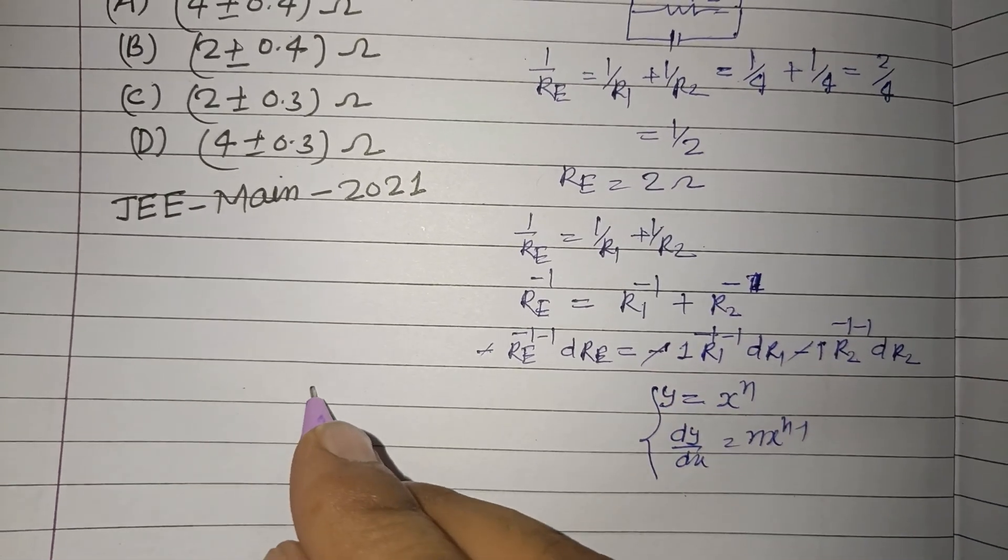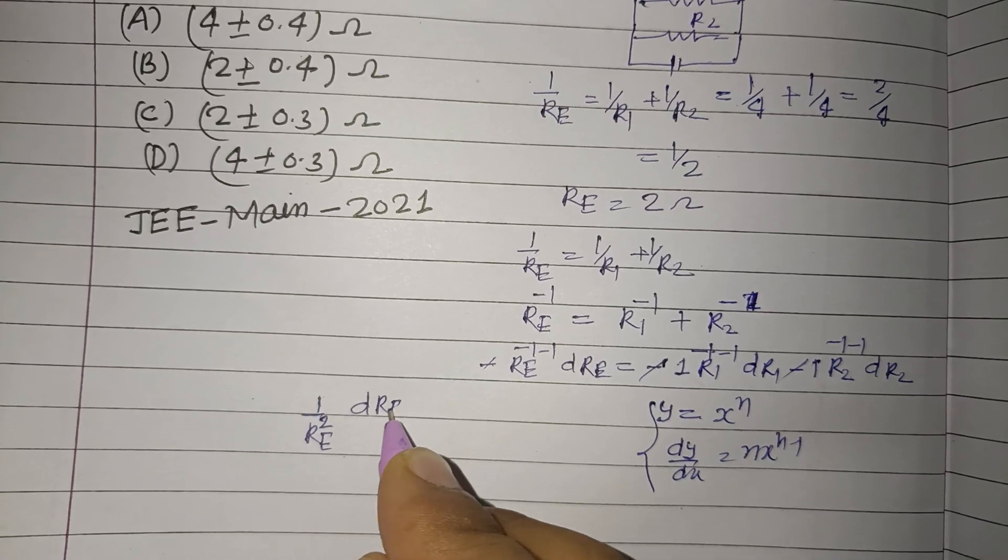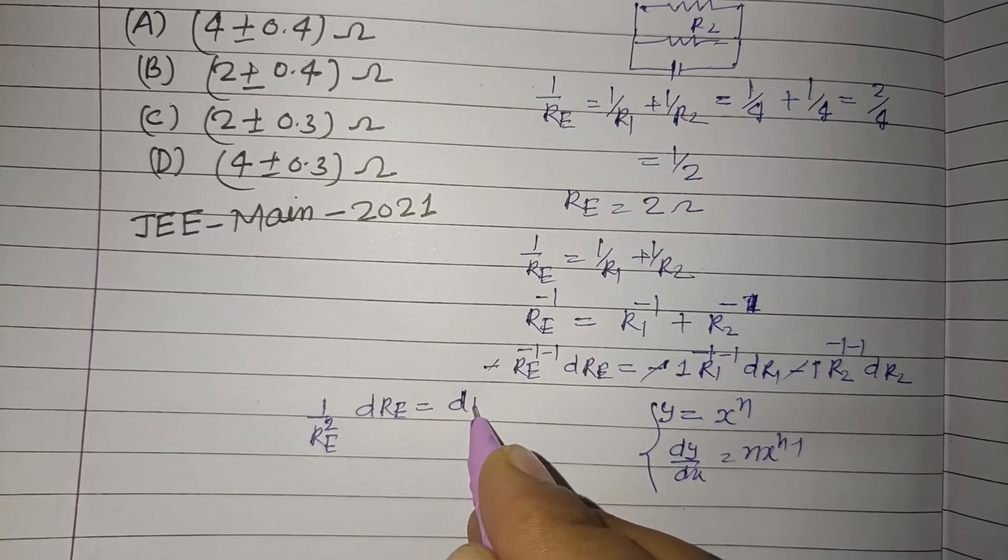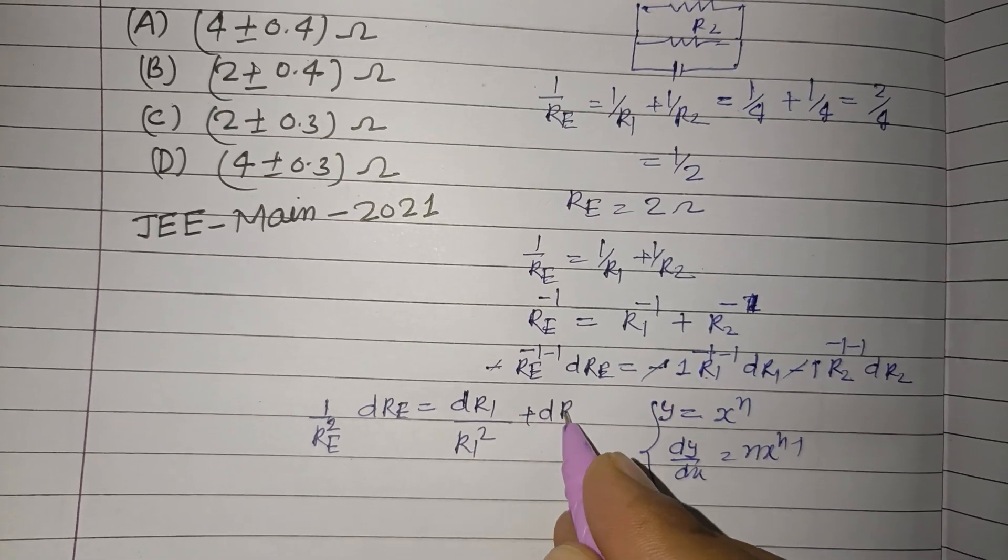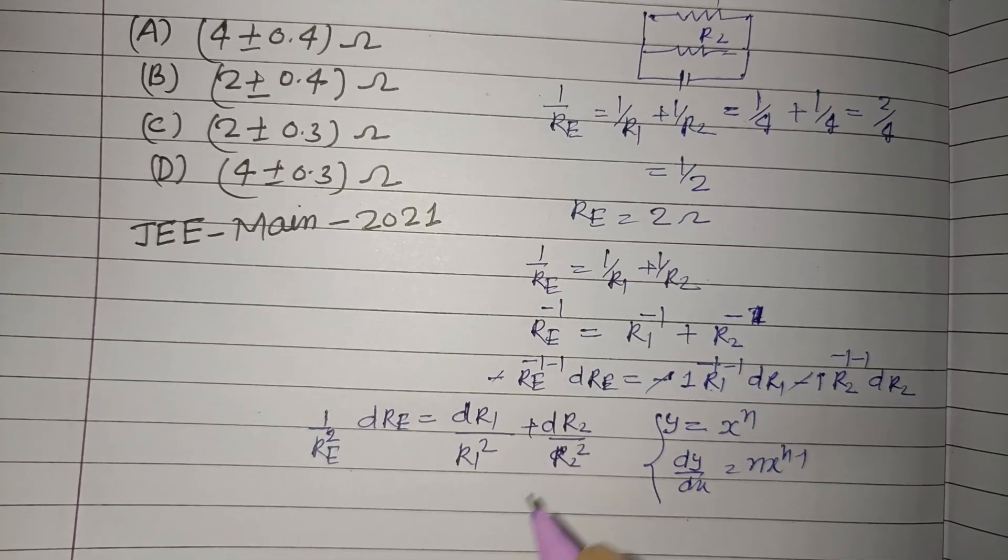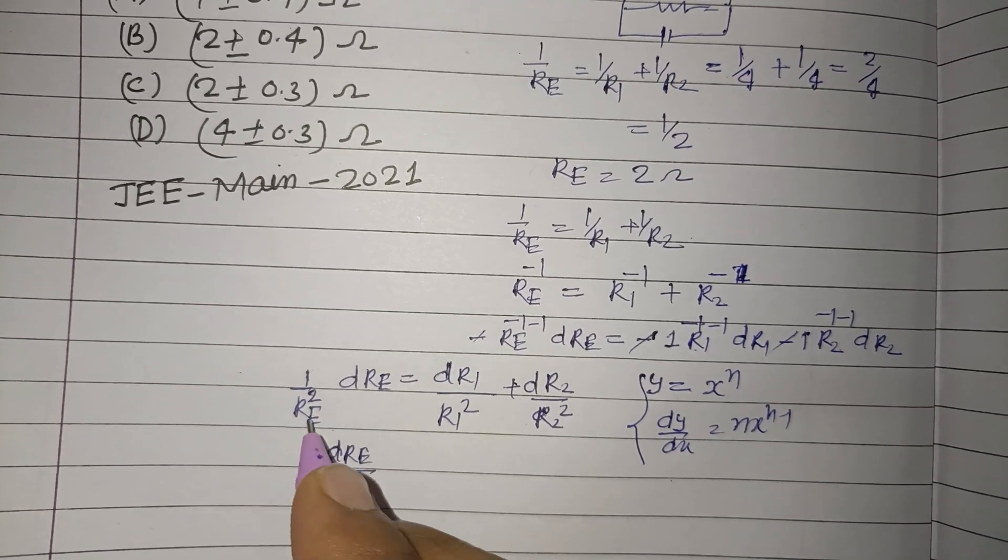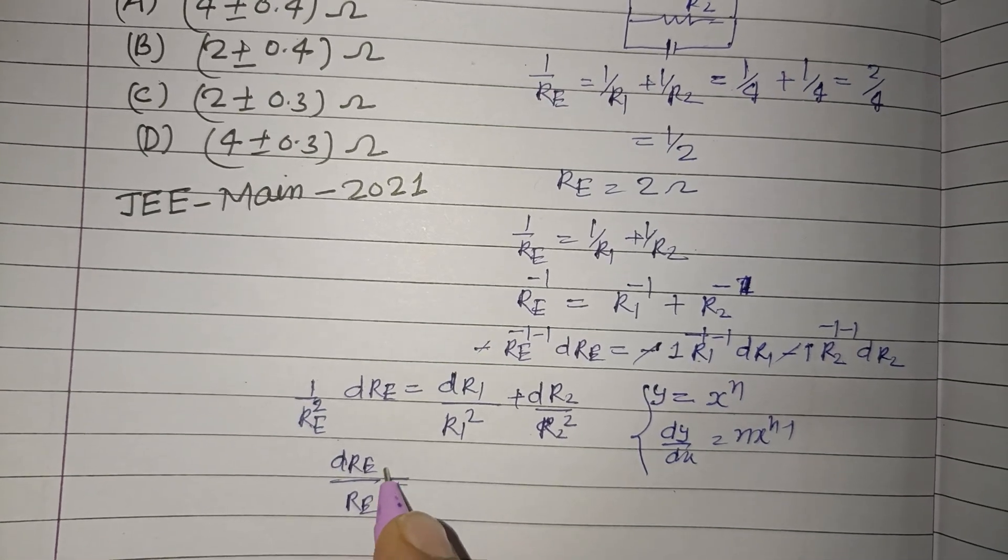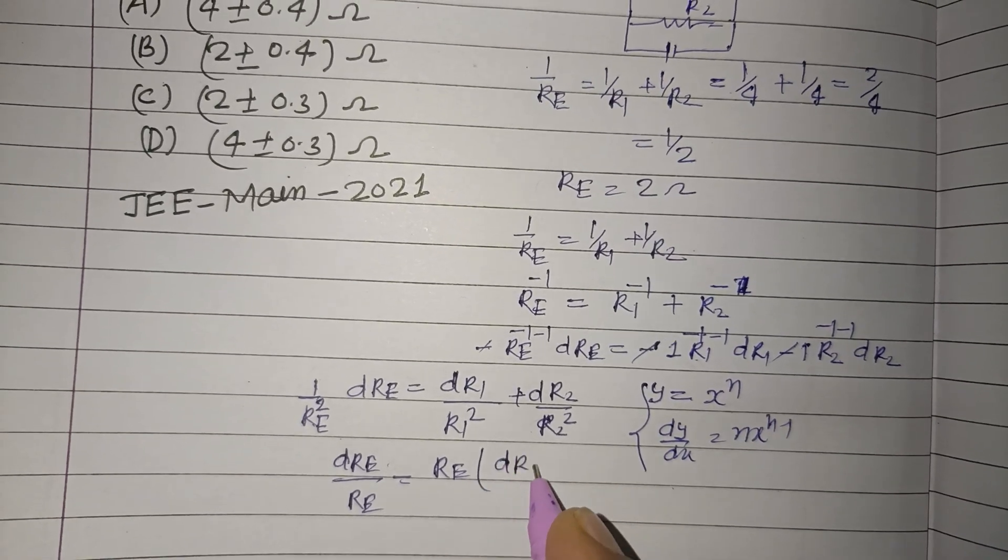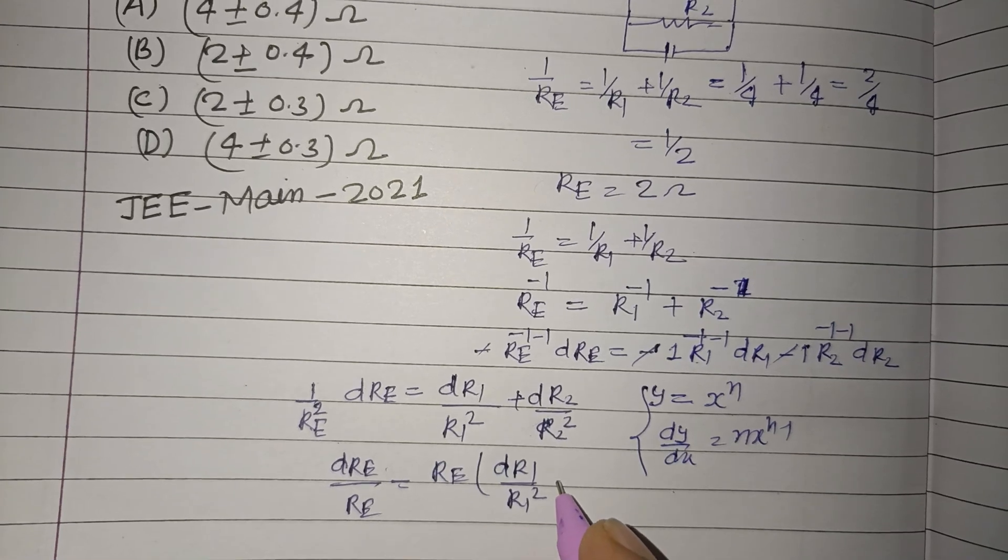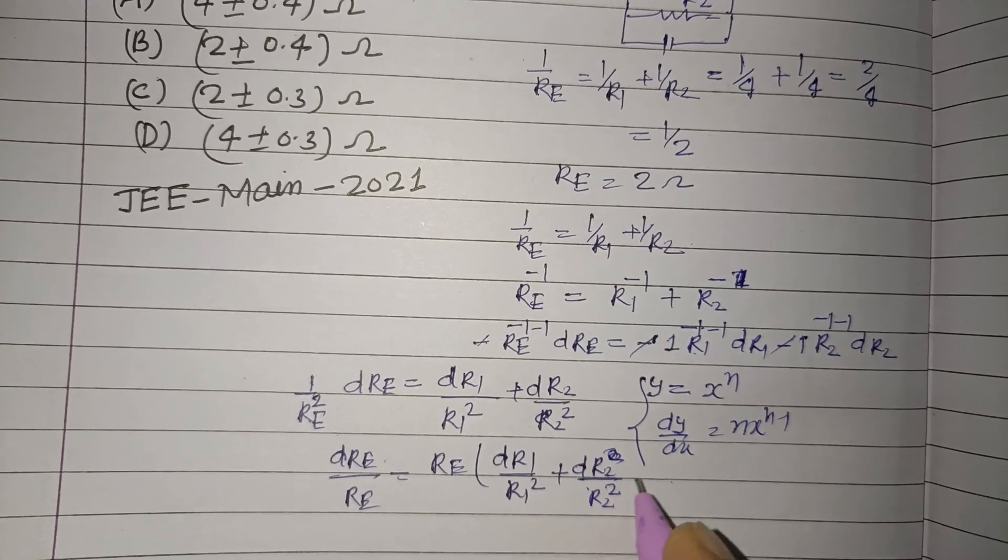So from here, minus 1 minus 1 minus 1 cancel. We get 1 upon RE square dRE equal to dR1 upon R1 square plus dR2 upon R2 square. So from here, dRE over RE, we take 1 upon RE square and bring it towards this side. RE square dR1 upon R1 square plus dR2 upon R2 square.